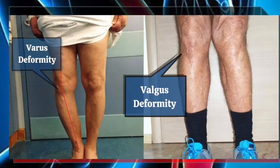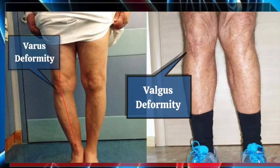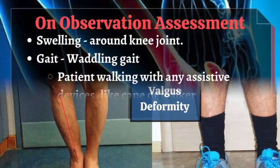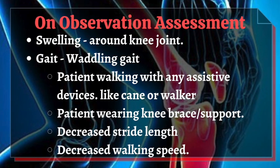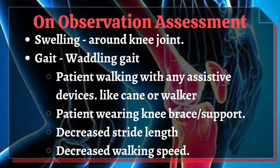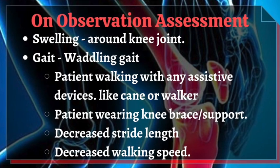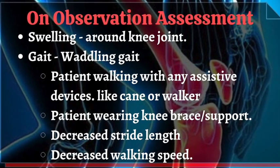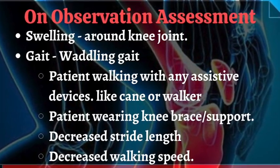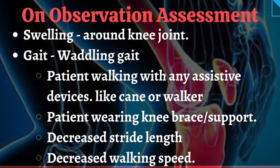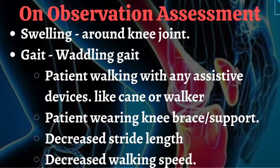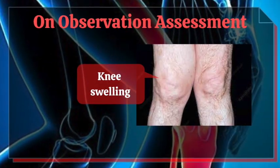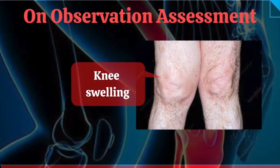In this figure you can see genu varum and genu valgum deformity, which are commonly seen in osteoarthritis. Observation also includes presence of swelling around the knee joint. Gait is commonly a waddling type. The patient may walk with an assistive device like a cane or walker, may wear a knee brace or support, and there is decreased stride length and walking speed.